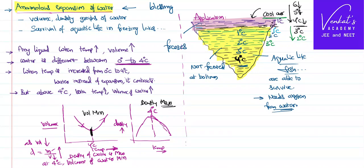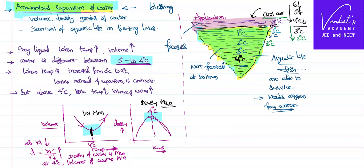If water did not have this specific property — anomalous expansion of water — then aquatic life would not be available under the water. All aquatic life survival under freezing conditions can be explained based on anomalous expansion of water. This is the property due to which density of water is maximum and volume of water is minimum at 4 degrees centigrade. Between 0 to 4, liquid water does not expand; rather it contracts. That particular property is called anomalous expansion of water.